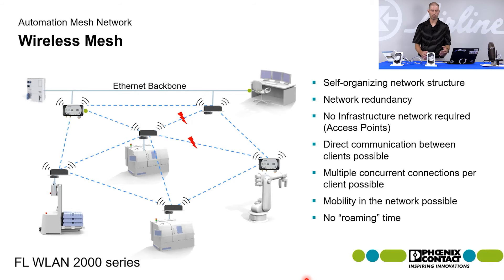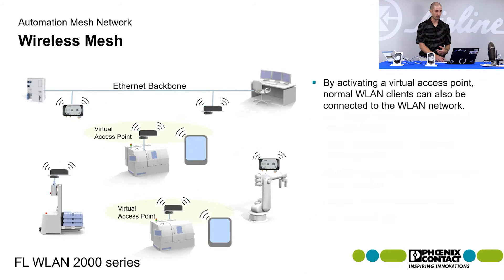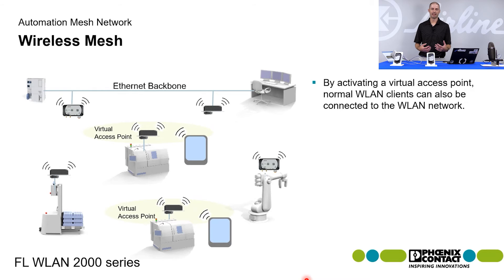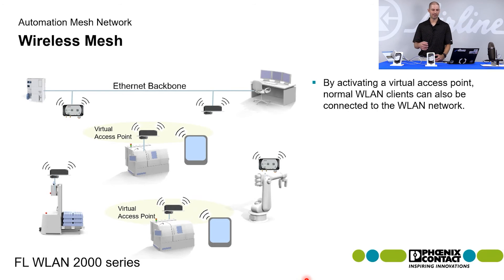When you have all your devices connected, you have a private network. Even though the network is visible, a third-party device would not be able to connect to it. You can also add a virtual access point on our device so that if you had a mobile device like a tablet, laptop, or phone that needed to access data on that mesh network, you can enable a virtual access point on the mesh node, which will allow that third-party device to have access to the mesh network.